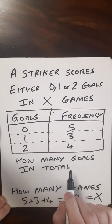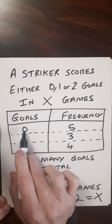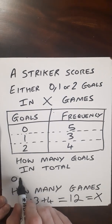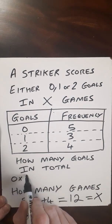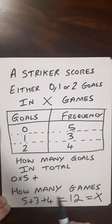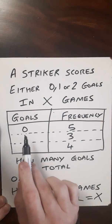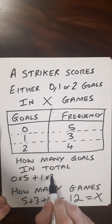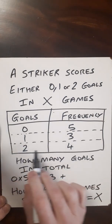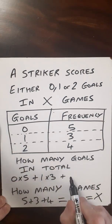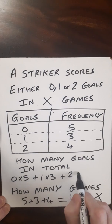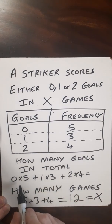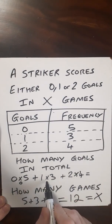Now, how many goals in total? Well, they scored no goals in 5 games, so that's 0 times 5. Then they scored 1 goal in 3 games, so 1 times 3. And they scored 2 goals in 4 games, so 2 times 4.